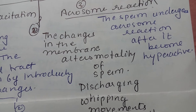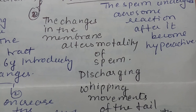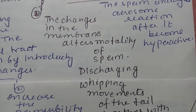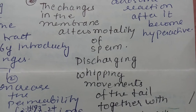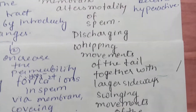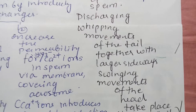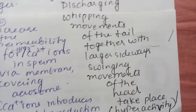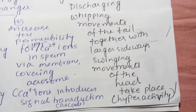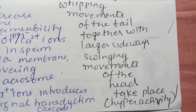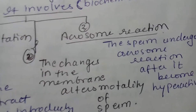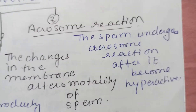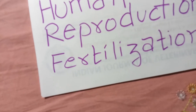Once these changes occur, the motility of the sperm is altered. A whipping movement of the tail together with a larger sideways swinging movement of the head takes place. This stage is called hyperactivity of the sperm. This further promotes the acrosome reaction — the sperm undergoes the acrosome reaction after it becomes hyperactive.